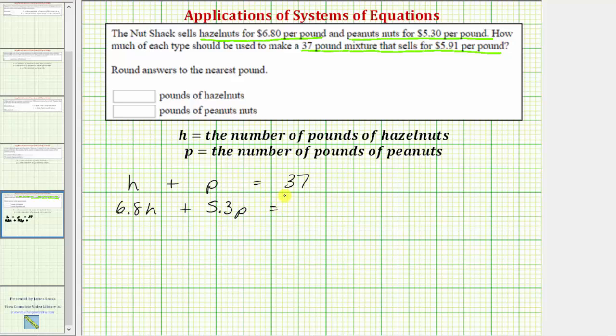And this must equal the total cost of the mixture, which should be $5.91 times 37 pounds, or 5.91 times 37. So now to determine how many pounds of hazelnuts and peanuts the mixture will have, we need to solve this system of equations. 5.91 times 37 equals 218.67, so let's write the second equation as 6.8h plus 5.3p equals 218.67.